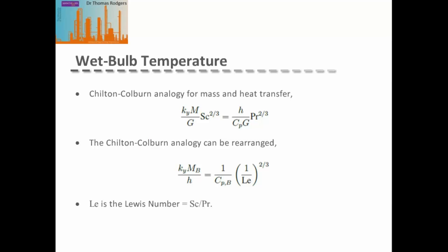The Chilton-Colburn analogy is a widely used analogy between heat, momentum, and mass transfer, derived from the fact that the basic mechanisms for heat, mass, and momentum transport are essentially the same. It directly relates heat transfer coefficients, mass transfer coefficients, and friction factors, permitting the prediction of an unknown transfer coefficient when another is known. Rearranging it gives the grouping of the mass transfer coefficient times the molecular weight of the dry gas divided by the heat transfer coefficient, equal to the inverse of the specific heat capacity of the dry gas times a function of the Lewis number.